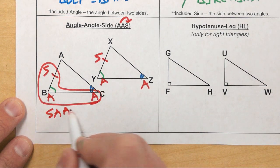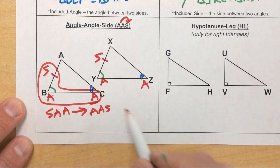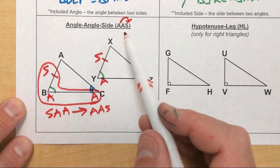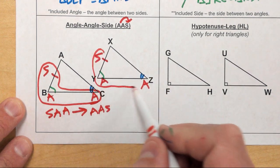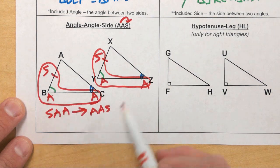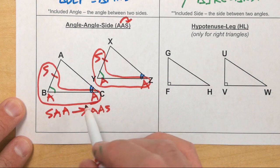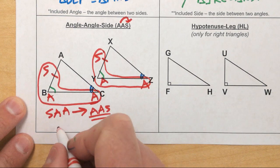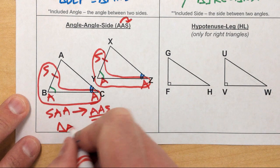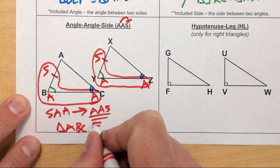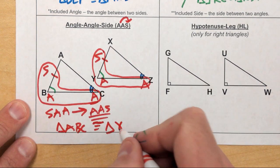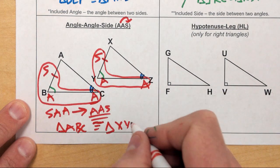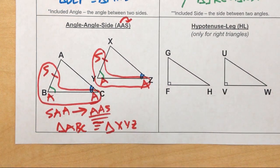So we get AAS, or Angle-Angle-Side. Don't say Side-Angle-Angle — there's an Angle-Angle-Side postulate, so if you ever get this, just flip it. This angle corresponds to this angle, this angle corresponds to this angle, and the side is not between the two angles. Since these both match up, I can say these are congruent by the Angle-Angle-Side postulate: triangle ABC is congruent to triangle XYZ, where A corresponds with X, B and Y go with each other, and C and Z come third. Hopefully that makes sense — we're going to do a couple practice problems after this.